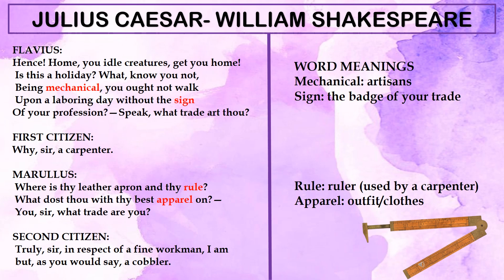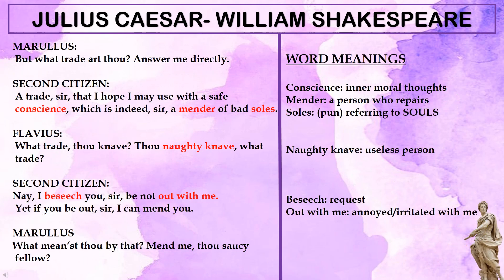Marullus then turns his attention to the second citizen and asks what trade he belongs to. The second citizen says he is a fine workman — a cobbler by profession. Marullus asks for more clarity, telling him to 'answer me directly,' meaning give more detail about his profession.